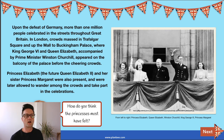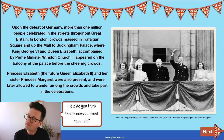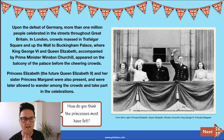Upon the defeat of Germany, more than one million people celebrated in the streets throughout Great Britain. In London, crowds massed in Trafalgar Square and up the Mall to Buckingham Palace, where King George VI and Queen Elizabeth, accompanied by Prime Minister Winston Churchill, appeared on the balcony before the cheering crowds. Princess Elizabeth — the future Queen Elizabeth II — and her sister Princess Margaret were also present and were later allowed to wander among the crowds and take part in the celebration.